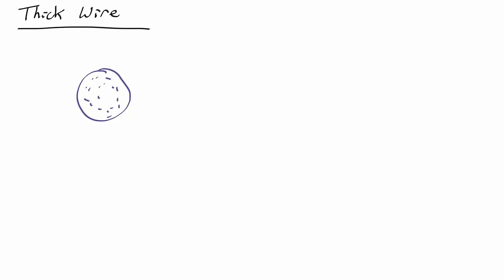So, what do we do? Step one, draw it. We know we've got a current coming out of the paper, therefore, by the right-hand rule, the magnetic field must go this way.